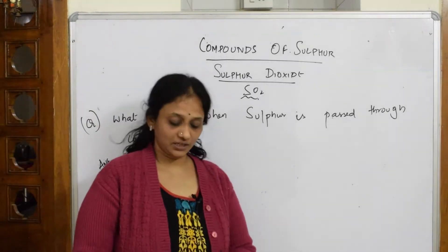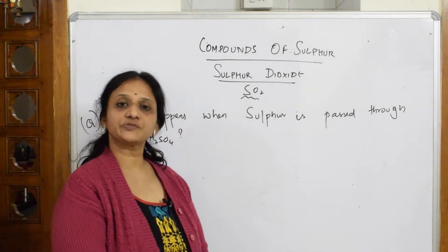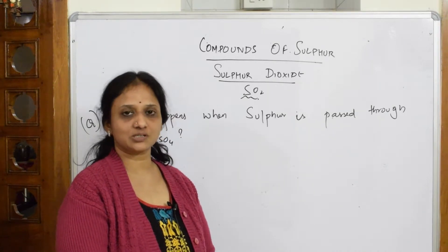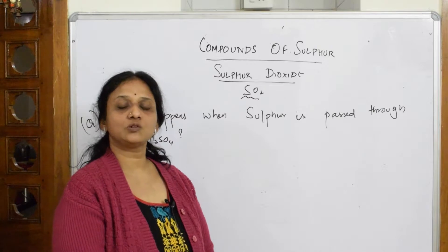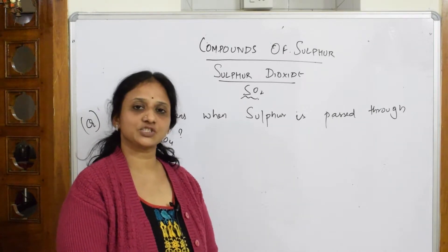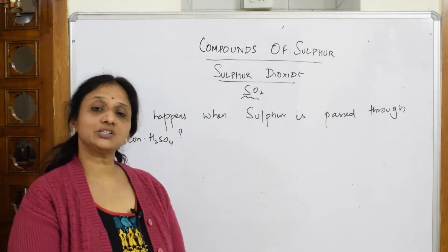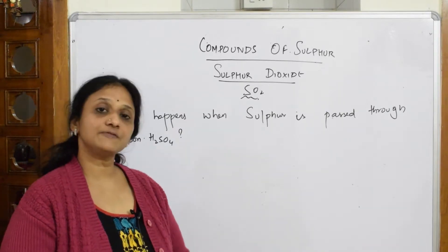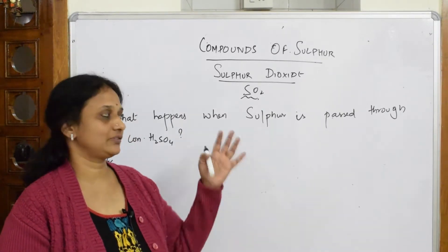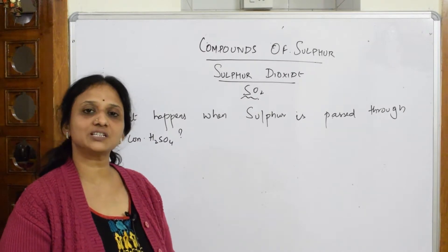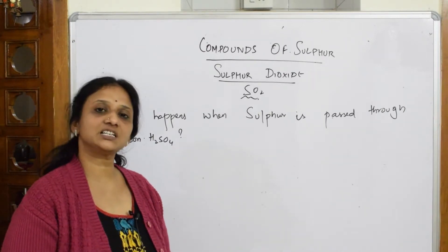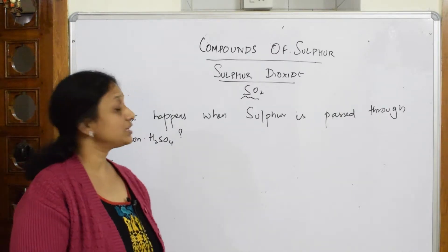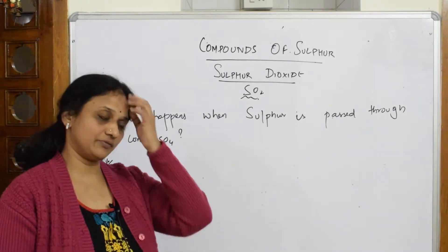Let's start with the compounds of sulphur. We have already studied the allotropes of sulphur, including the structures of sulphur allotropes, and discussed the concept of transition temperature. Now we are gradually moving into the compounds of sulphur — specifically the oxide forms: sulphur dioxide and then sulphuric acid and the oxo acids.